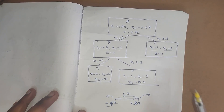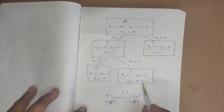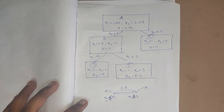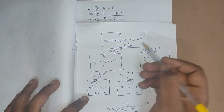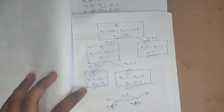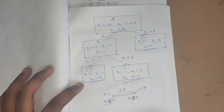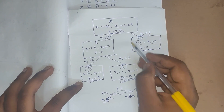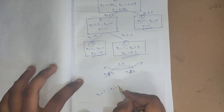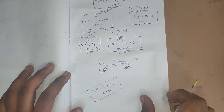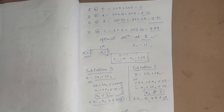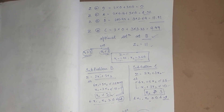Looking at the full tree, integer solutions are obtained at three places: subproblems D, E, and C. The initial solution was Z = 11.92, and upon repeated branching the values decrease. Comparing the integer-feasible solutions — Z = 11, Z = 10, and Z = 10.2 — the maximum is 11. Therefore the optimal integer solution is x1 = 1, x2 = 3, Z = 11. This concludes the branch and bound method.